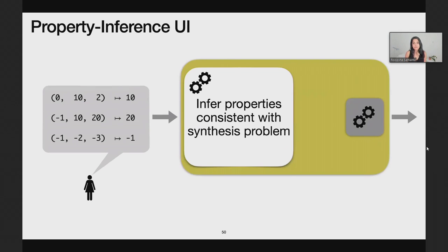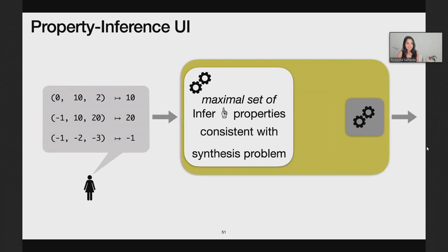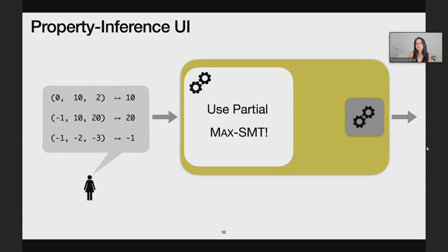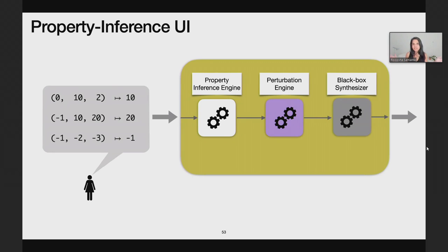In the third and coolest UI, our engine seeks to infer properties that are consistent with the synthesis problem at hand. What we try to do is actually infer a maximal set of properties consistent with the synthesis problem. For those familiar with SMT solvers — satisfiability modulo theory solvers — and the partial MaxSAT SMT formulation, we pose this inference problem as a partial MaxSAT problem and use that to infer a maximal set of properties. But we know this is not the only way to do this, so we model it with a generic property inference engine in our pipeline.